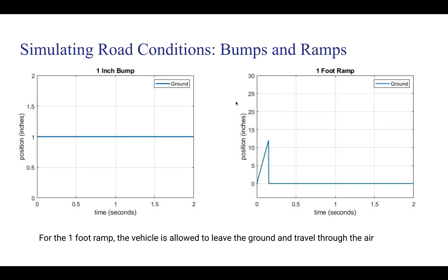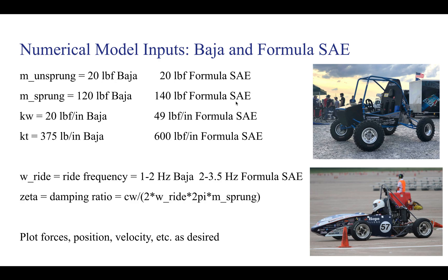To show an example of how we can model this suspension quarter car model, we have a few different road conditions. We have some bumps and we have some ramps. Here shown in the figure we have a one inch bump, you can see by the position versus time it's constant. Then we have a one foot ramp, you can see the position versus time is at an incline, and then the ramp is allowed so that the vehicle can travel and leave the ground.